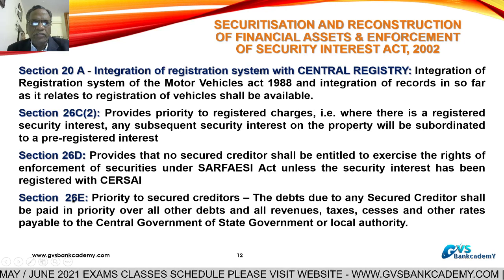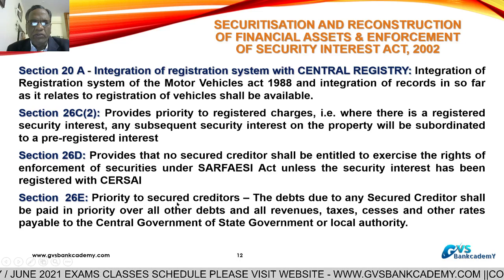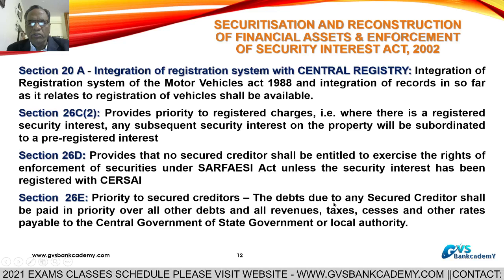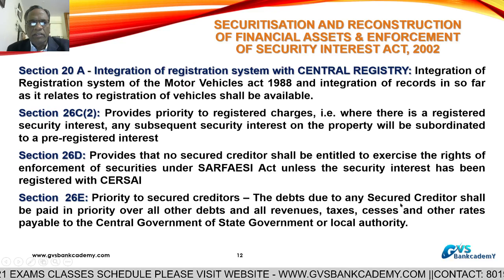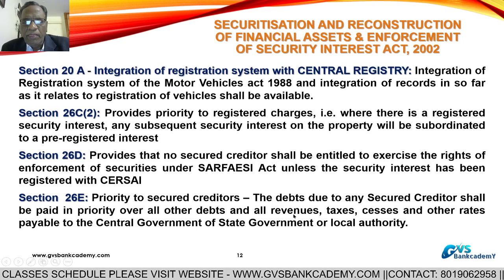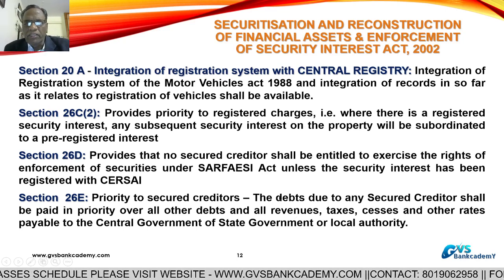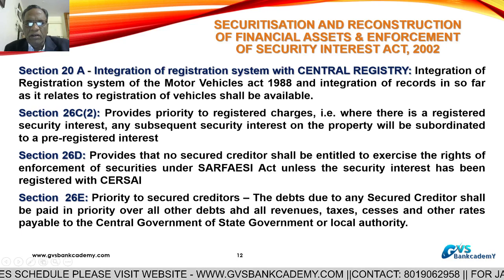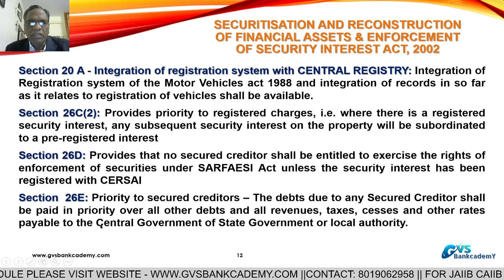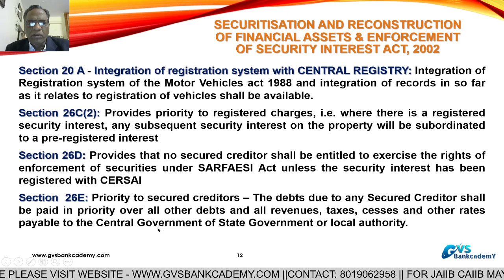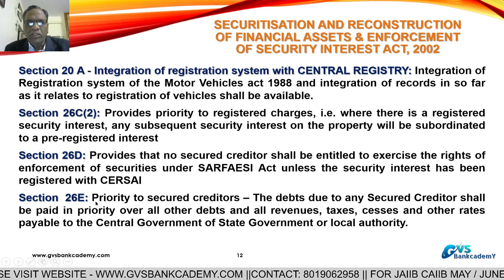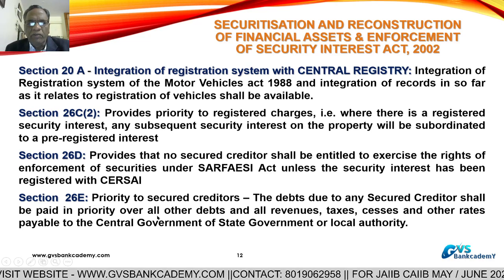Section 26E deals with Priority to Secured Creditors, providing that debts due to any secured creditor shall be paid in priority over all other debts and revenues. The secured creditor has prior right over all other debts and revenues, including taxes and other debts payable to the central government, state government, or local government.